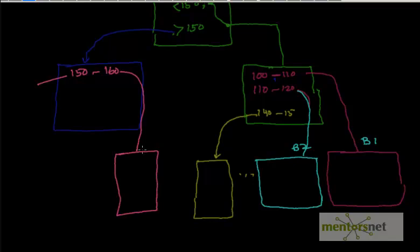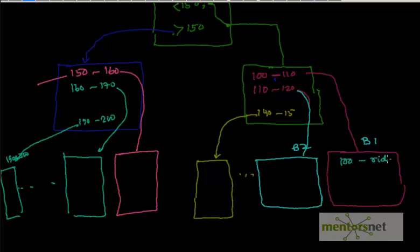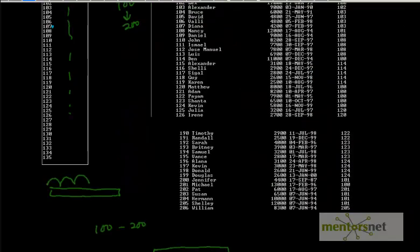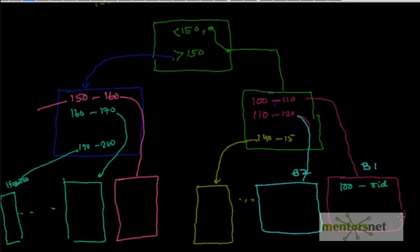That block contains all employee IDs from 150 to 160. Then for 160 to 170, you go to another block, and so on. Finally, there's a block containing IDs 190 to 200. In the final leaf block, we have the employee ID — say, 100 — and its row ID, for example row ID 1. Then 101 with row ID 2, and similarly 160 with row ID 9, and 165 with row ID 55, and so on.